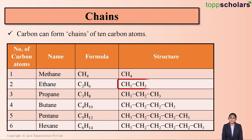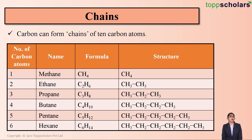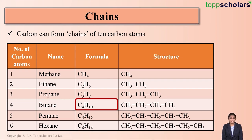The structure of ethane is CH3–CH3. The next one is propane, which has three carbon atoms and its formula is C3H8. The structure of propane is CH3–CH2–CH3. The next one is butane, which has four carbon atoms.